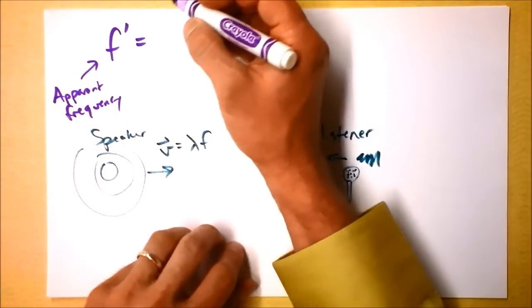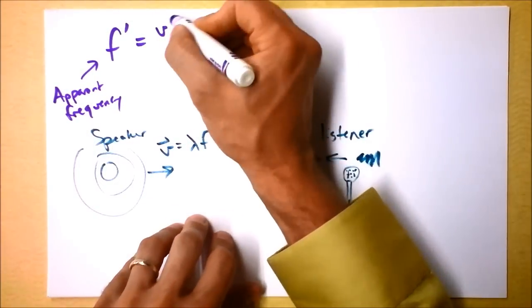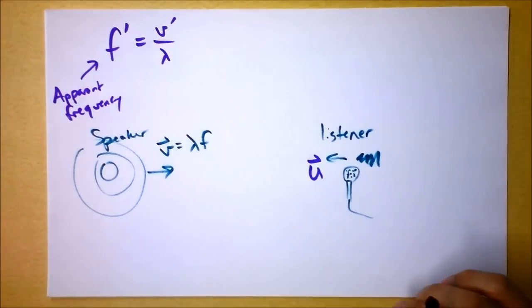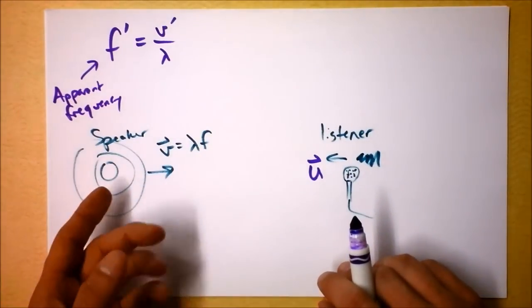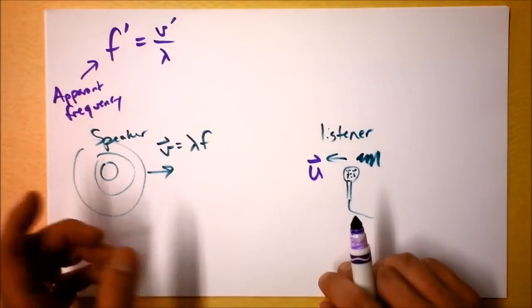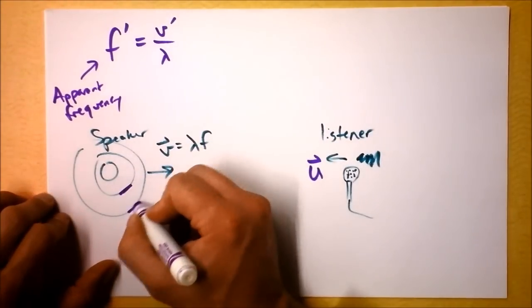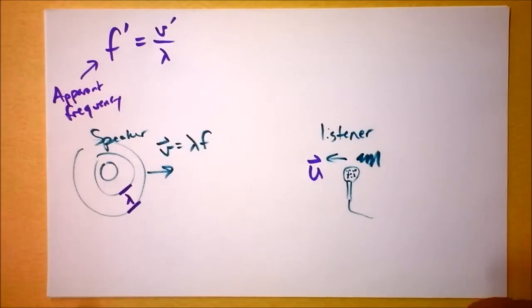And that's going to be the apparent speed of the wave, the apparent speed of the wave, divided by lambda. Does that make sense? Why should it be that? Well, we take this equation right here and we solve it for F. Now the wavelength is going to be measured the same by everybody. Everybody could take a moment in time and measure that this distance right here is lambda.